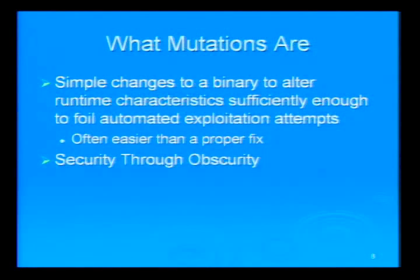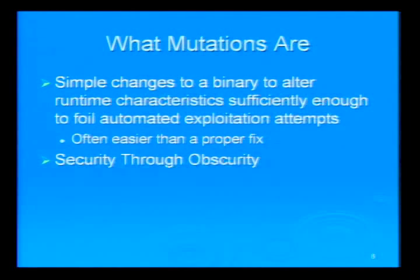There have been a few patching talks through Black Hat and DEF CON. They've talked about the new Microsoft hot patching features, where with certain compiler switches you basically have built-in room at the beginning of every function to hook in, divert the function call, and inject patches that way. That's not what this is all about. What I'm talking about here is simple changes to a binary to alter its runtime characteristics — not necessarily its behavior — sufficiently enough to foil automated exploitation attempts.